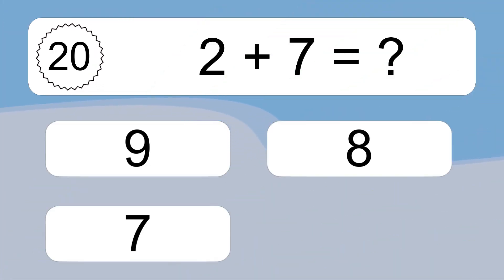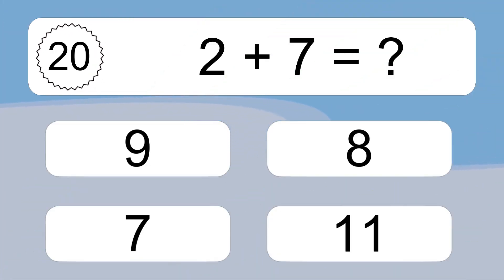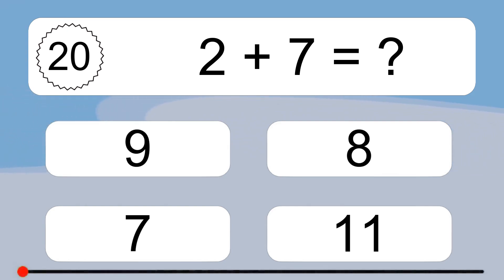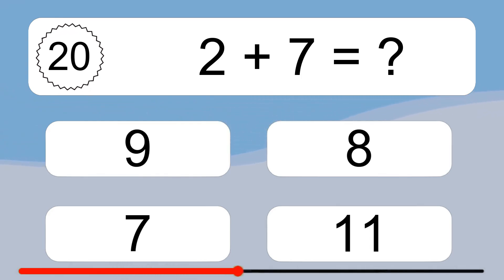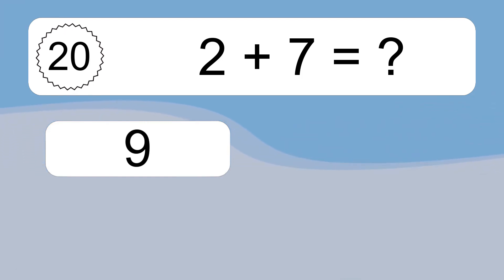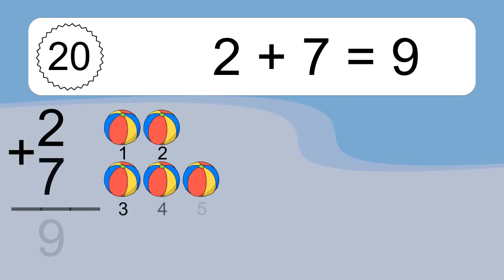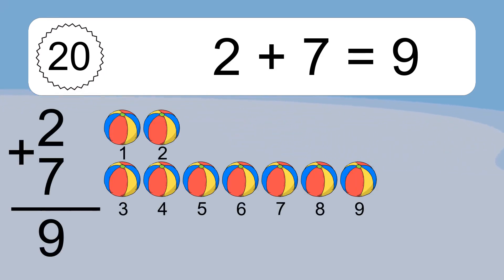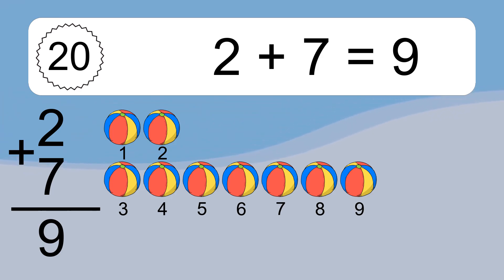2 plus 7 equals what? 2 plus 7 equals 9. Let's count it: 1, 2, 3, 4, 5, 6, 7, 8, 9.